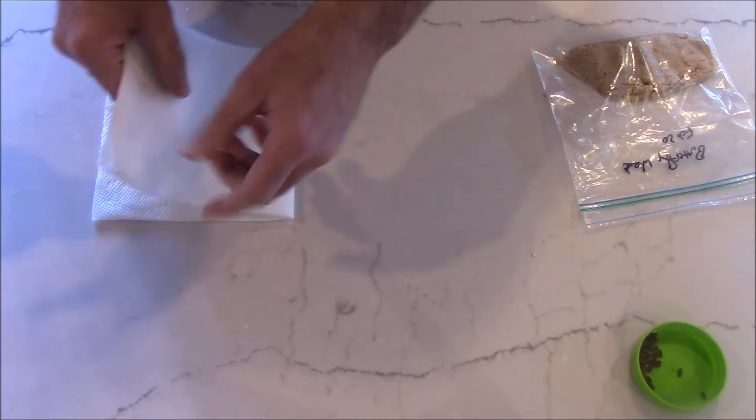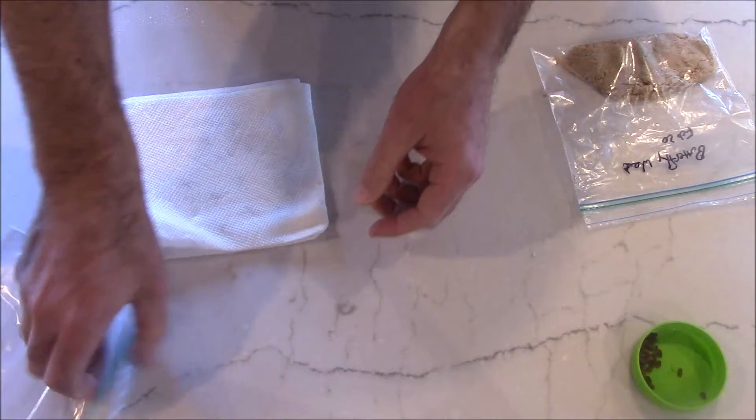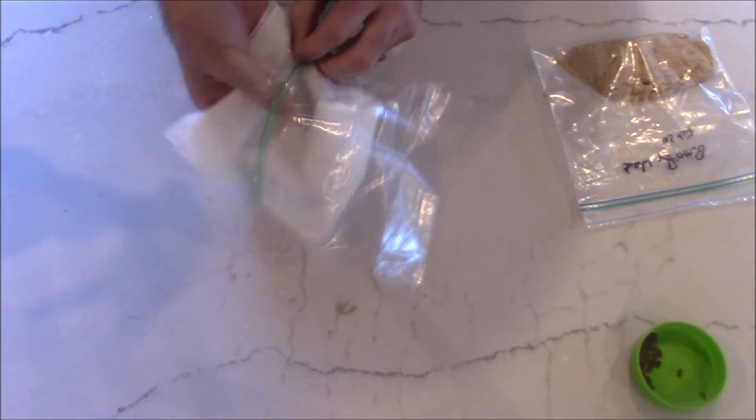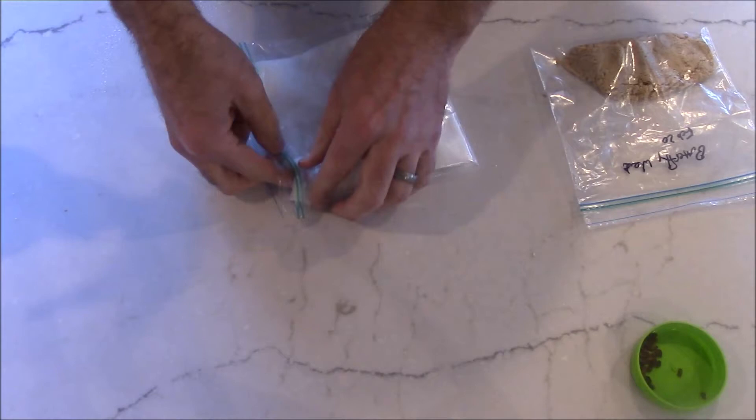A lot of the seeds that you're going to try to grow will say they need like 30 days stratification, two months, something like that. So this is the way that you can achieve that when either you don't live in a cold climate or you waited too long and need to grow that seed. But again, label it and date it and try not to forget about it. I know I've done it before.